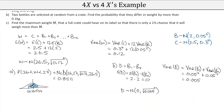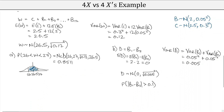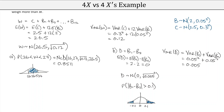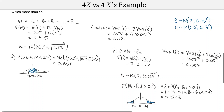Now answering the question: the probability they differ by more than 0.1. The difference can be positive or negative, so we want P(|B1−B2| > 0.1). Looking at the distribution diagram, we want the regions beyond 0.1 and beyond −0.1. We can compute 2×P(D > 0.1), or equivalently 1 − P(−0.1 < D < 0.1). Both give the same answer of 0.1573.